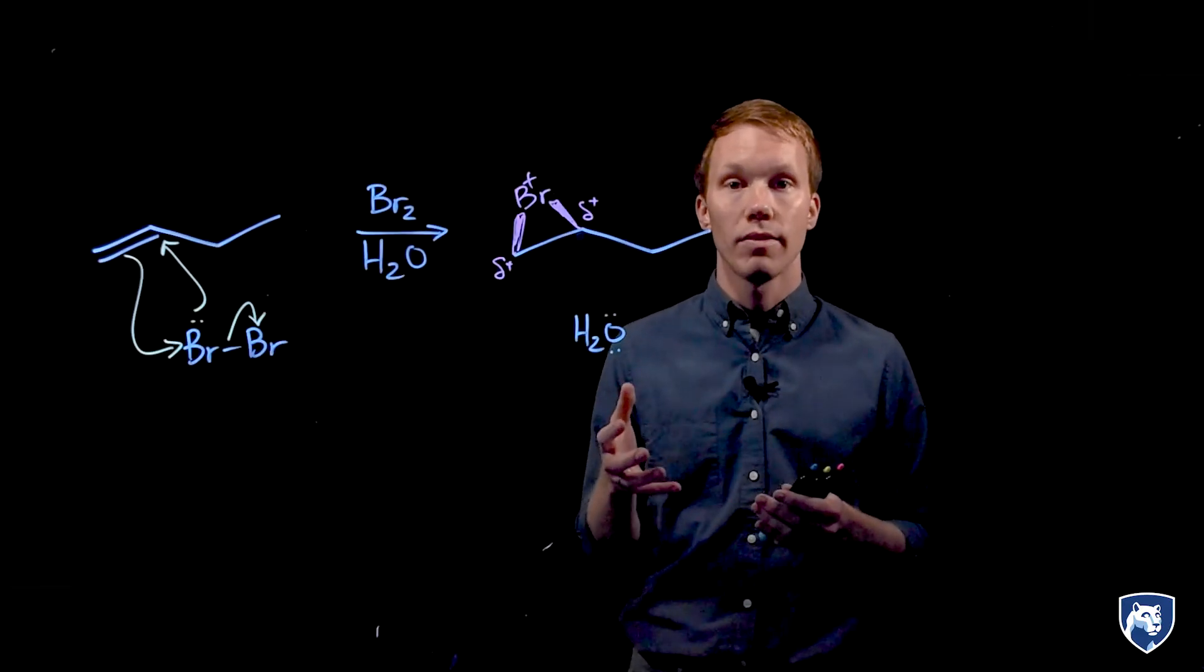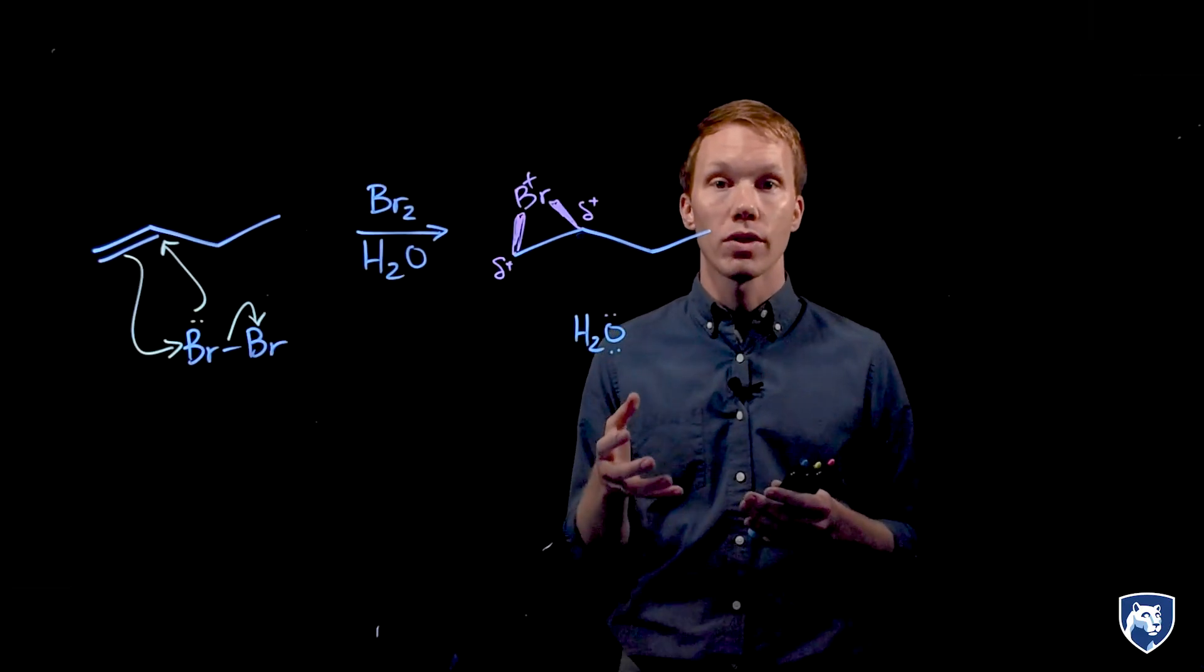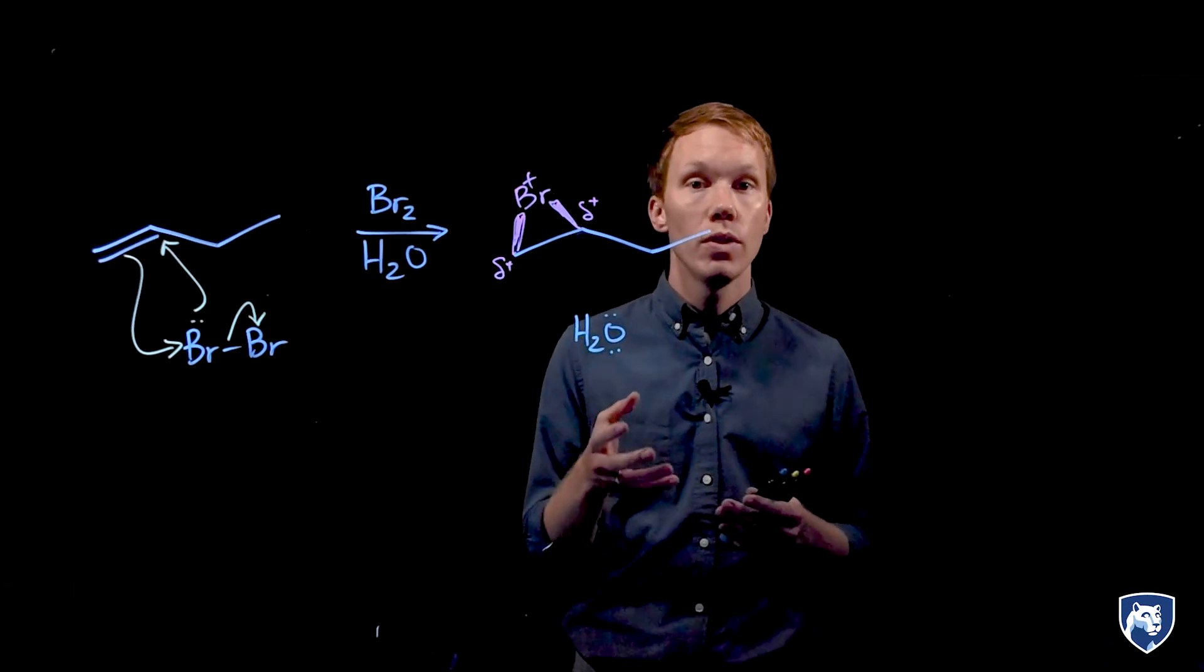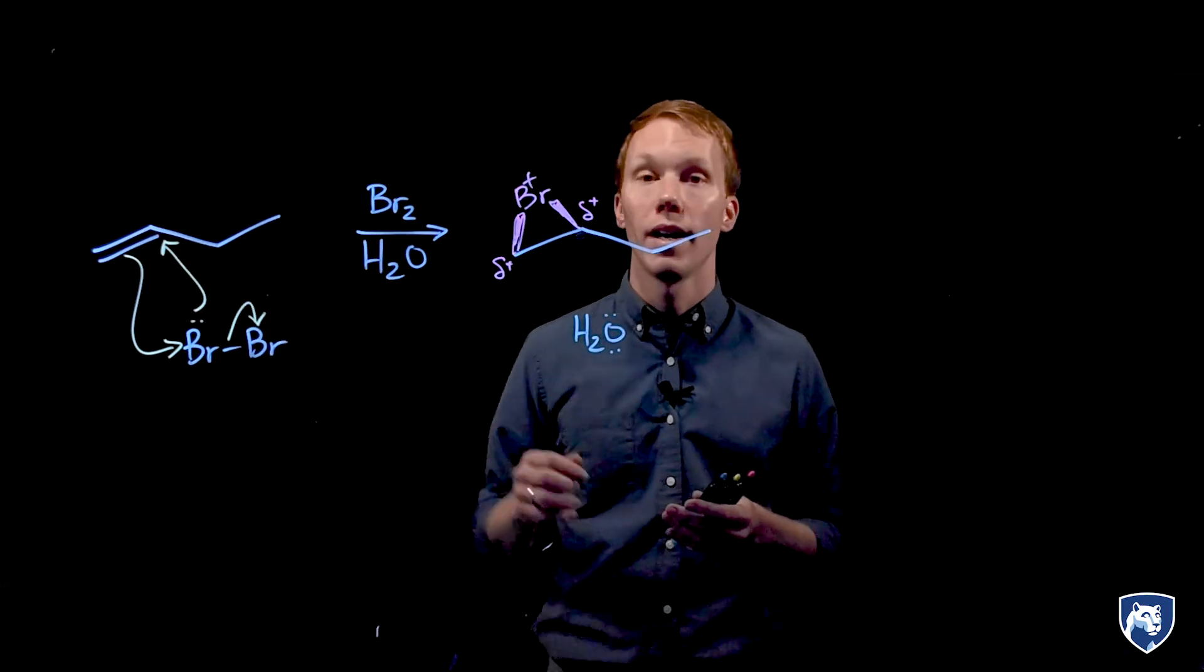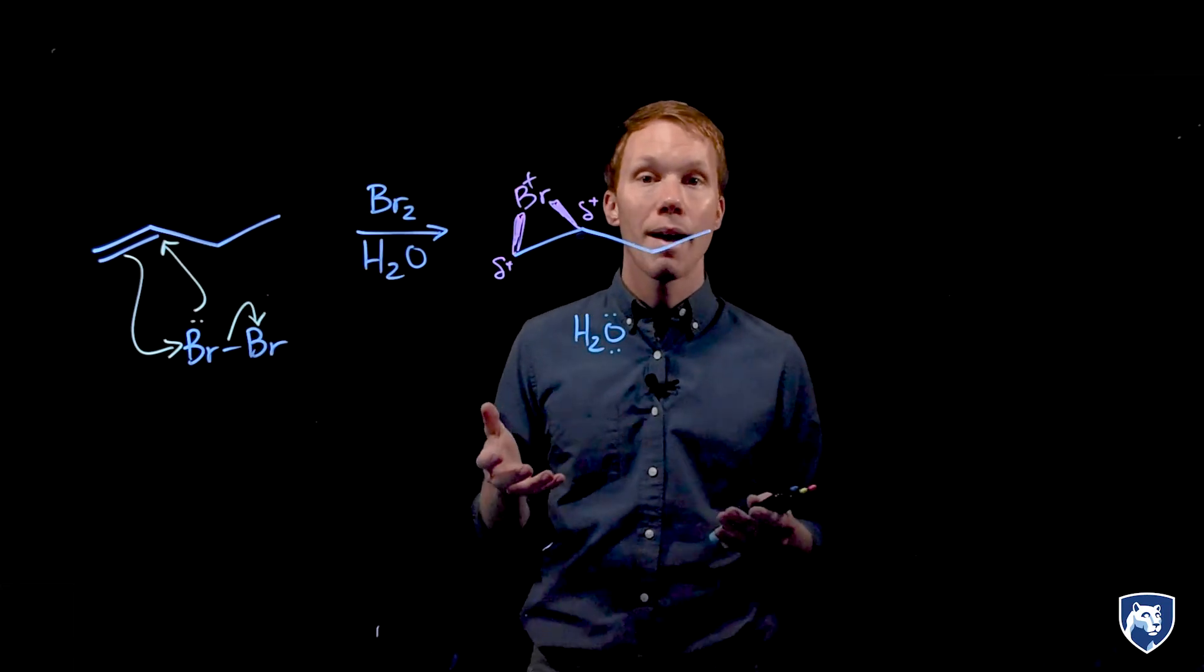This reaction is regioselective when water or alcohols are used as solvents. The new carbon-oxygen bond forms preferentially on the more substituted carbon of the double bond. So how does this happen and why?